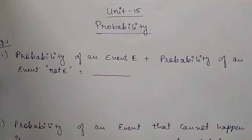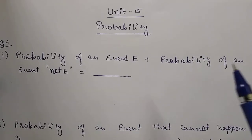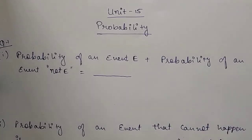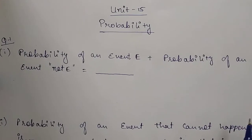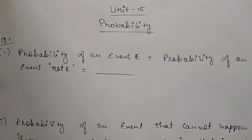Hello students, this is the 15th unit of class 10th NCERT book. The first question says: the probability of an event E plus the probability of an event not E.